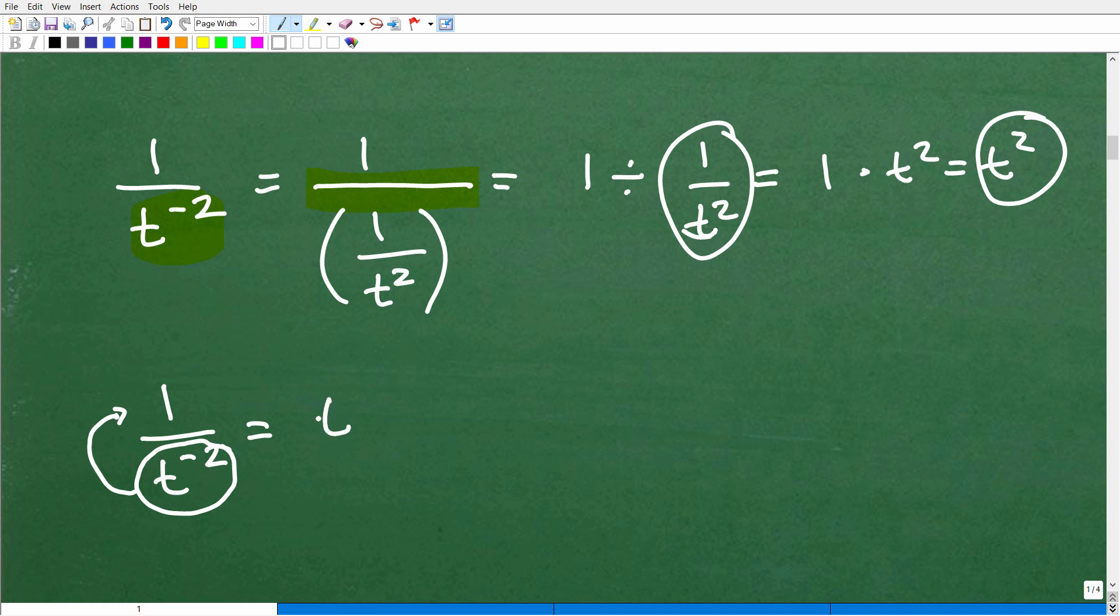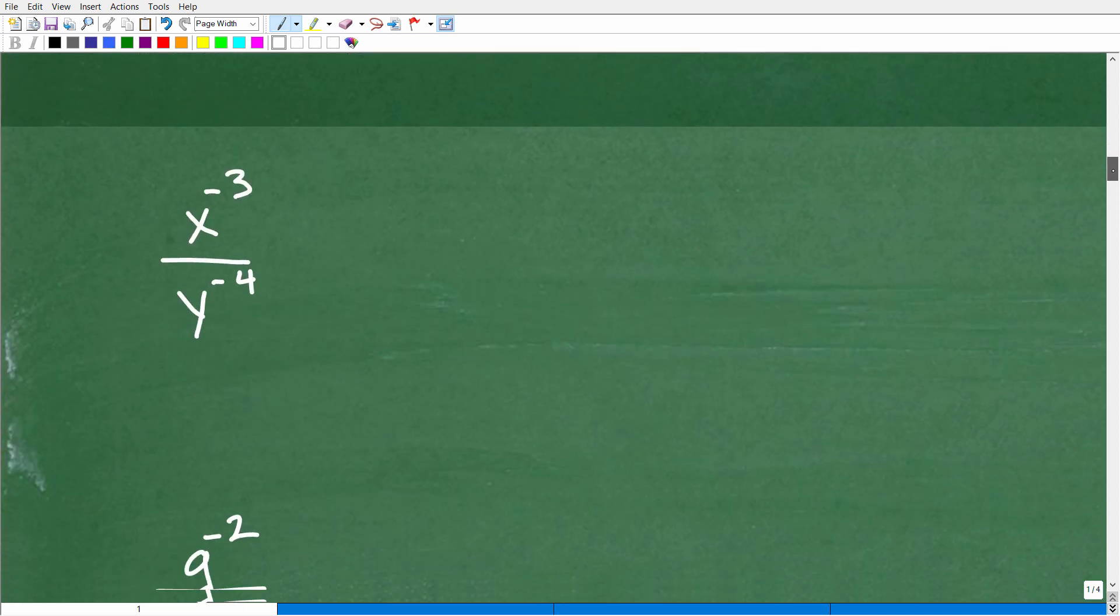So here it's t to the negative 2. So I'll move it up to the numerator. That becomes positive 2 over 1 or just t squared, okay? And that's what we have. So that's how you want to think about this. So let's move on, take a look at some more examples.